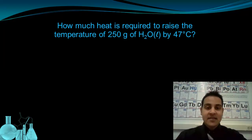This question is asking us how much heat is required to raise a temperature of 250 grams of water, liquid water, by 47 degrees Celsius. So because I have a temperature change by 47 degrees Celsius, I know that I need to use this equation. Q equals M times specific heat times delta T. And like always with an equation, the first thing I want to do is identify my variables.